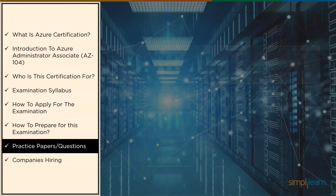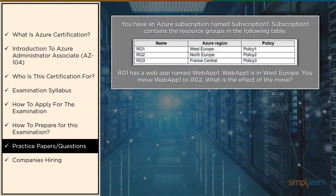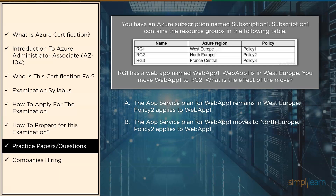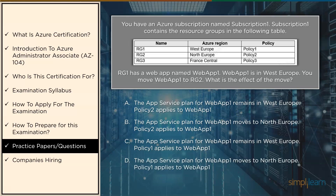The second question: you have an Azure subscription named subscription one. Subscription one contains resource groups in the following table. RG1 has a web app named web app one located in West Europe. You move web app one to RG2. What is the effect of the move? Options: A) the app service plan for web app one remains in West Europe, policy two applies; B) the app service plan moves to North Europe, policy two applies; C) the app service plan remains in West Europe, policy one applies; D) the app service plan moves to North Europe, policy one applies. The correct answer is option A. If the source and target plans are in the same resource group and geographical region, you can migrate an app to another app service plan. The app service plan determines the region in which it runs, and you cannot change the location of an app service plan.